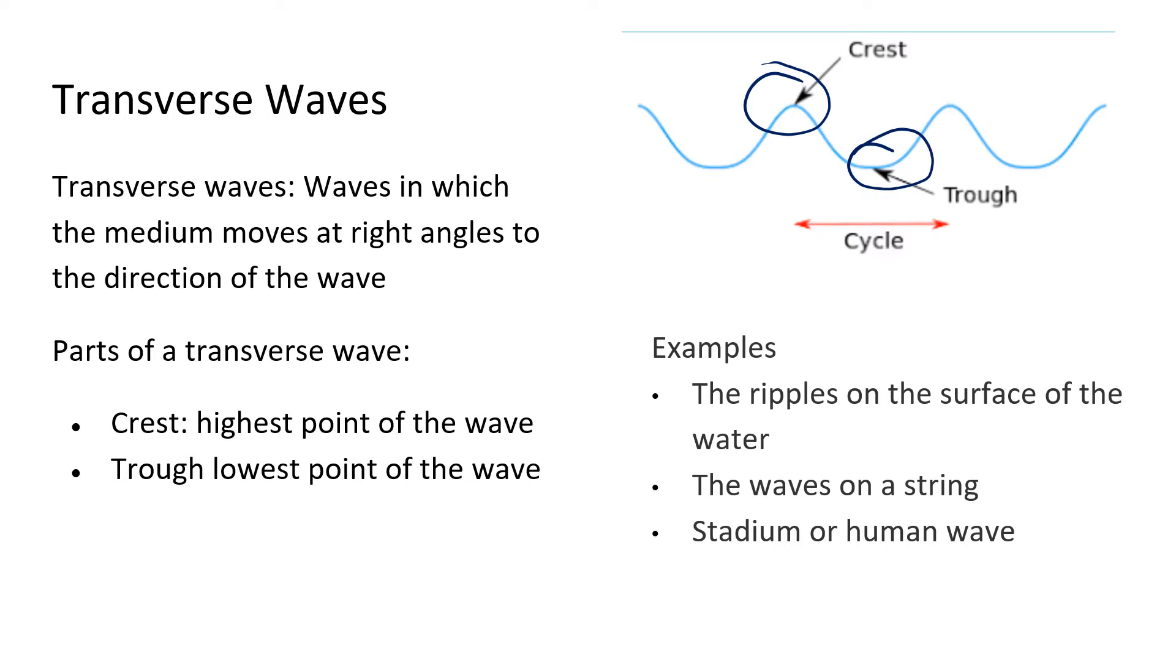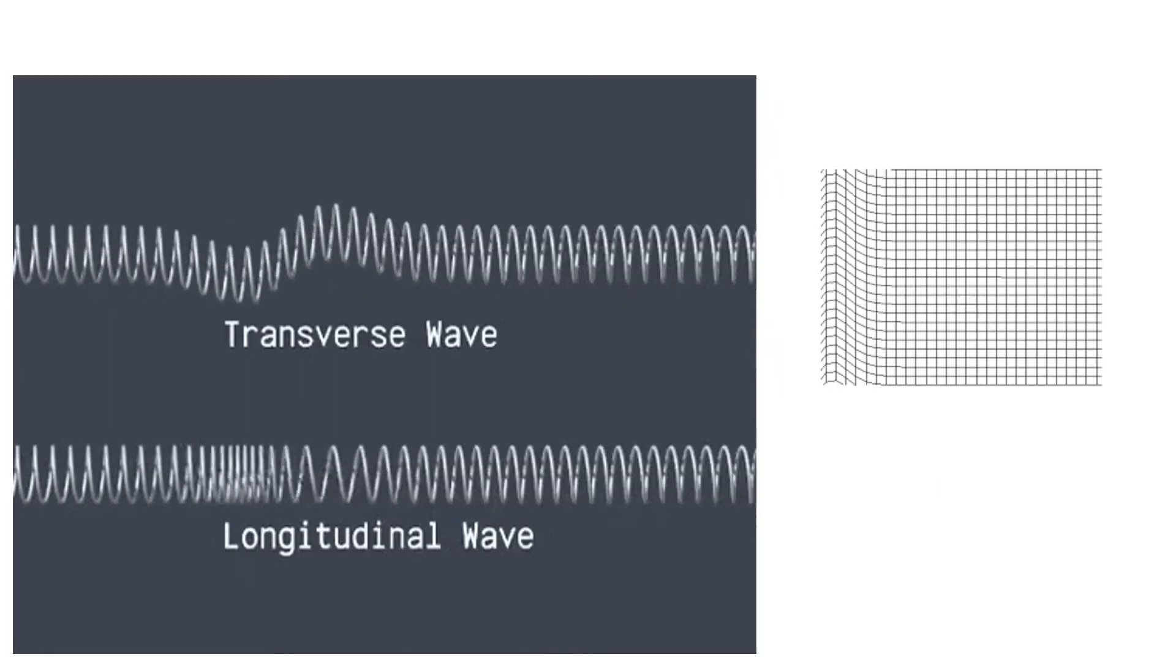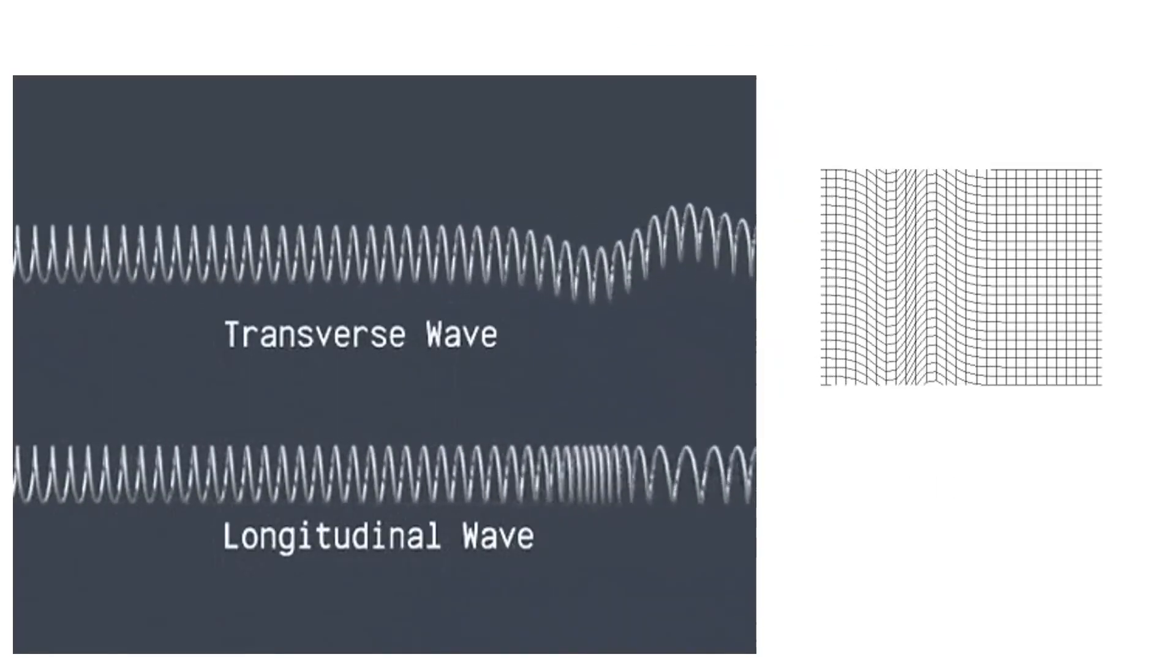Some examples of transverse waves are ripples on the surface of water, waves on a string, or a stadium or human wave. When we're in class, I plan to show different videos of different types of waves so you can see what we're talking about.